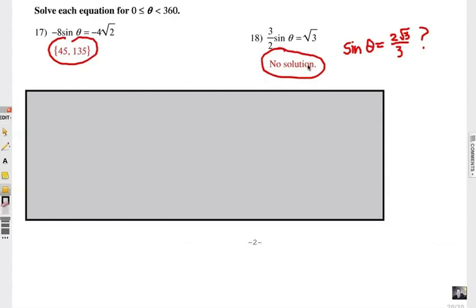But at number 18, it's no solution because we said the sine of theta had to be two radical three over three, and that does not exist on this unit circle. No solution.